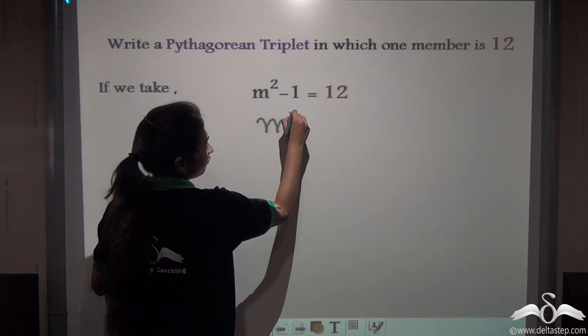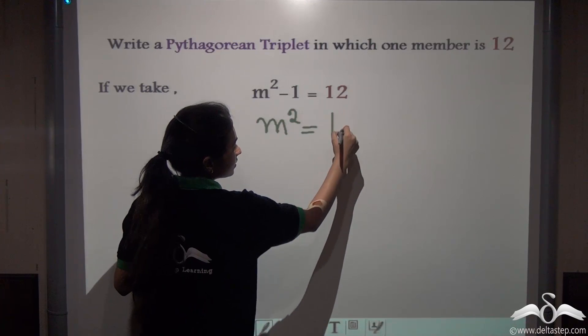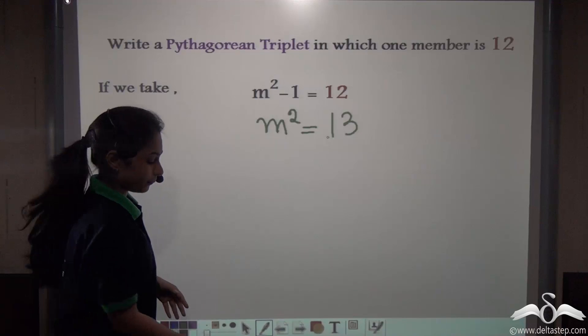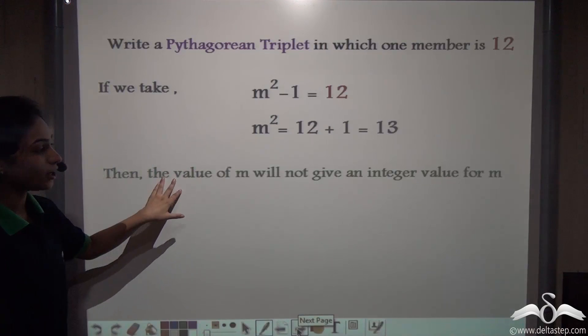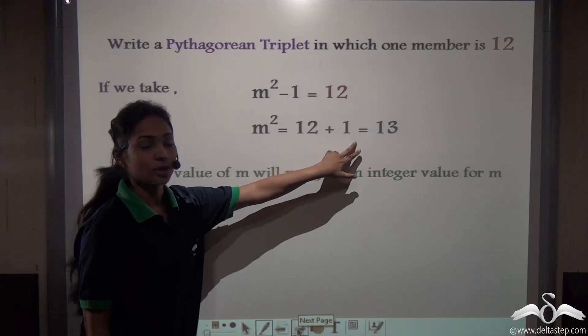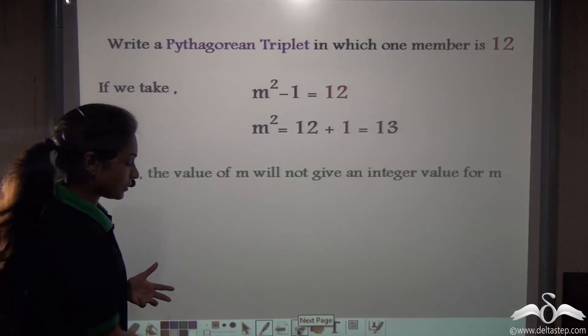So solving it for m, what do we get? m squared is 13. Now if I square root 13 to get m, this value of m will not give an integer value. m squared is equal to 13. So let us try something else.